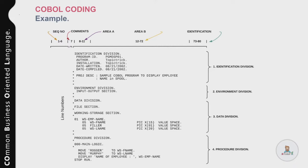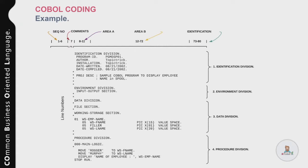Looking at the right-hand side of the screen, you can see the four divisions of a COBOL program: Identification Division, Environment Division, Data Division, and Procedure Division where the business logic is specified. In the next couple of slides we'll look into each division in detail. For now, remember this is how you write a COBOL program and these are the column positions to keep in mind.